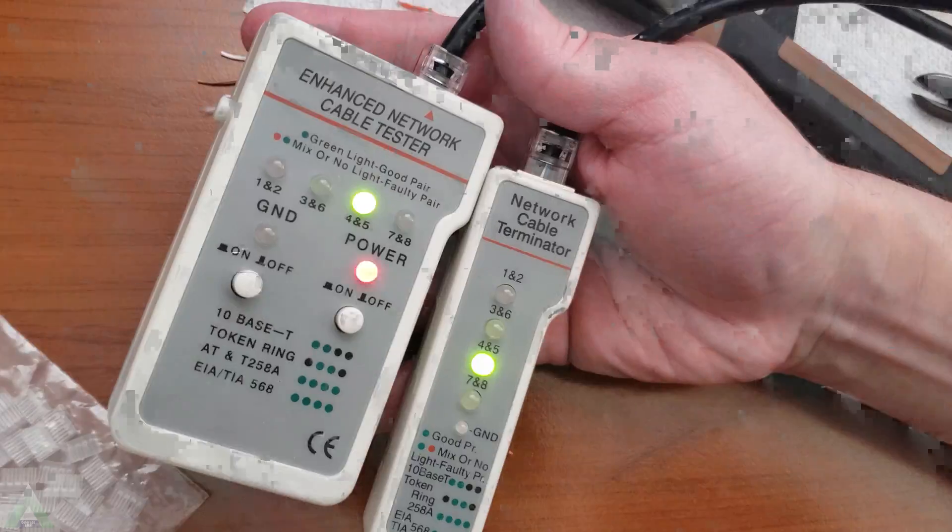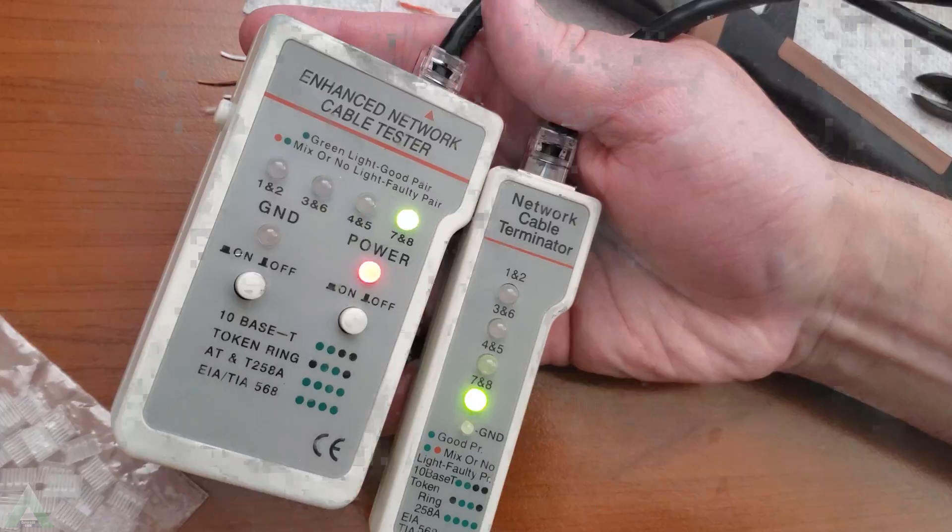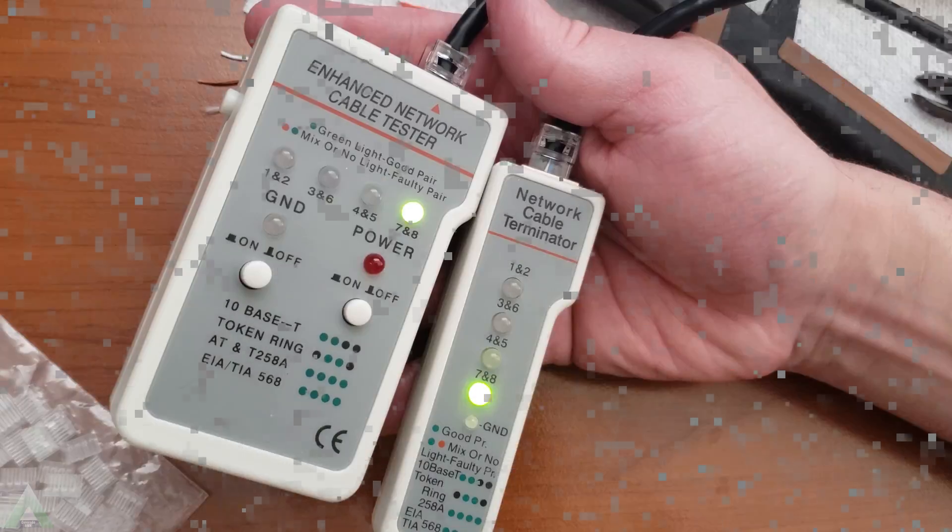You'll put in one end and then verify that we have good parity across all cables. So one and two, three and six, four and five and seven, eight cables are successfully communicating. This is a good cable and we're done.